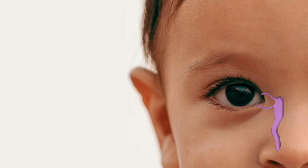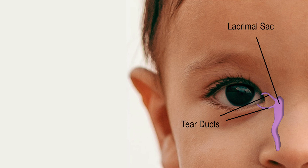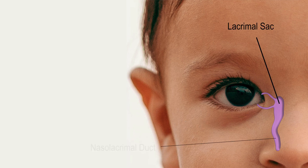Normally, the tears produced by the lacrimal gland to keep the eye moist drain into the tear duct openings present in the upper and lower eyelids. The tears then pass into the lacrimal sac, before draining out into the nose via the nasolacrimal duct.